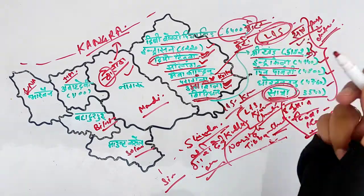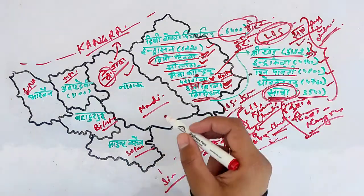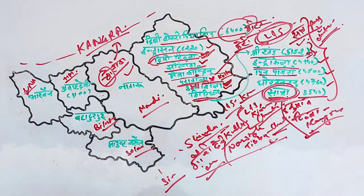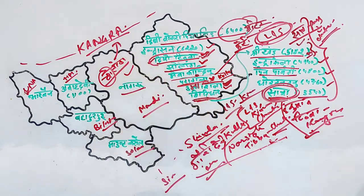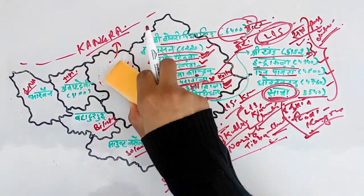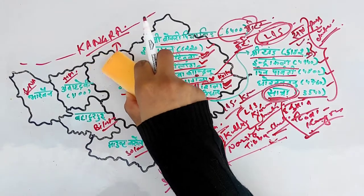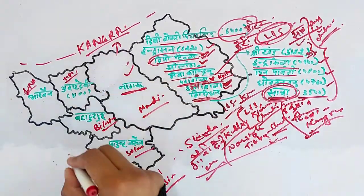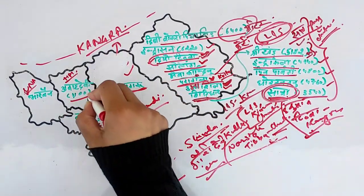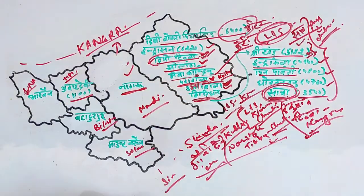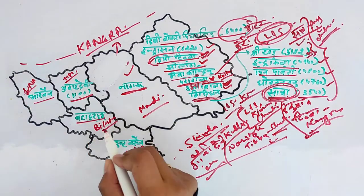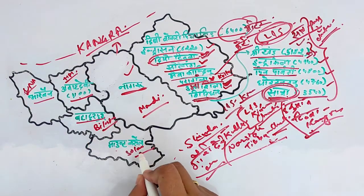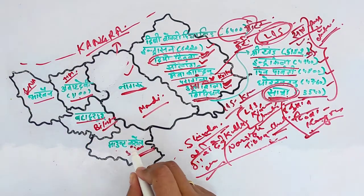The highest peak of Mandi is Nagru. Hamirpur's peak is Awa Devi, whose height is 1100 meters. Bharven is Una's peak. Bhadurpur is Bilaspur's peak. Mount Karola is Solan's peak. You just need to know these names.